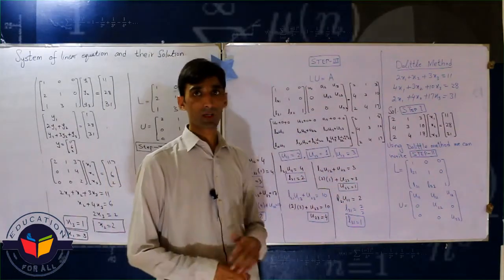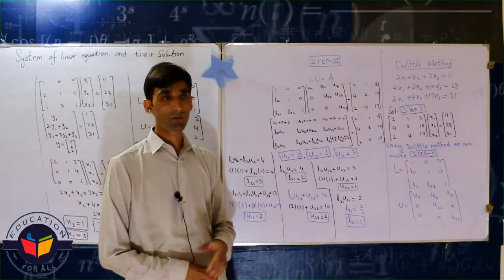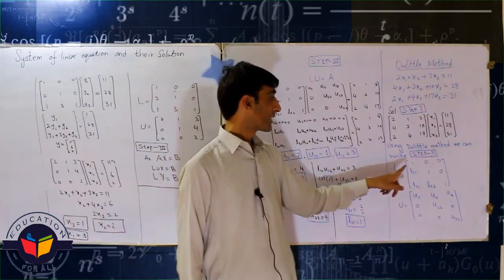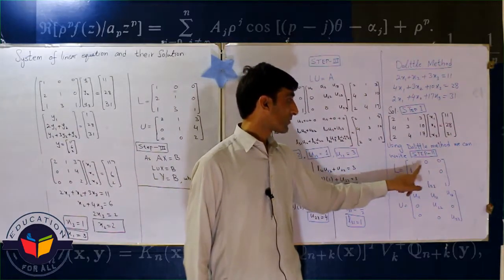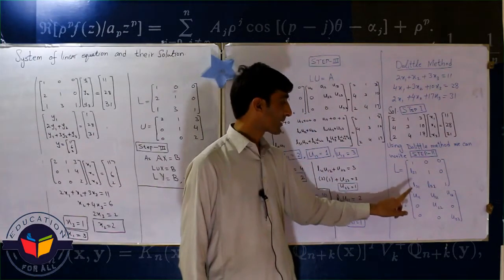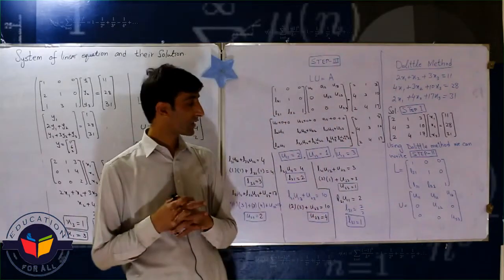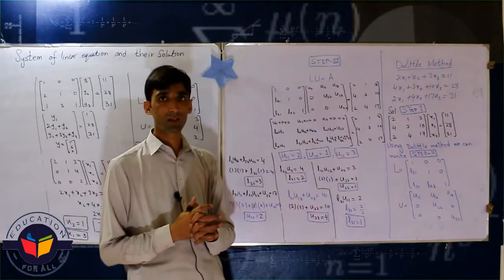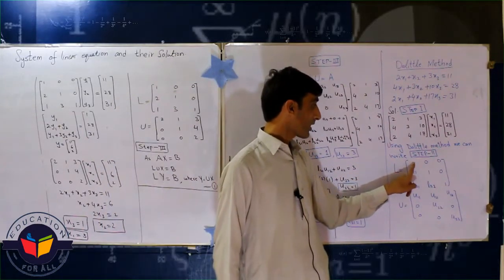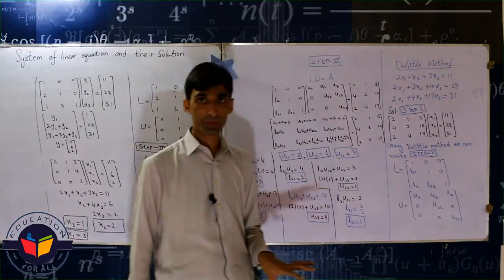If we discuss Crout method, in Crout method we take L as L11, L12, L13 and same are here, but here we write one, one, and one in Crout method. But if we discuss Cholesky method, in Cholesky method we write here L, L11, L12, L13, and U is as it is.